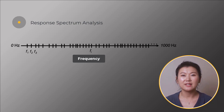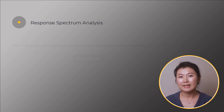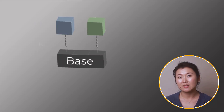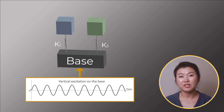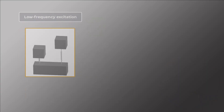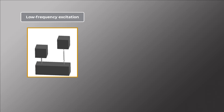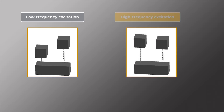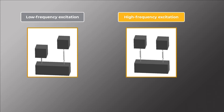To better answer this question, let's look at a simple system of two cubes connected to a base, each with different springs. As we excite the base vertically, the two cubes will vibrate and we'll see differences in the response based on the excitation frequency. The left animation shows a response with a low frequency excitation on the base, and the right animation shows the response with a high frequency excitation.